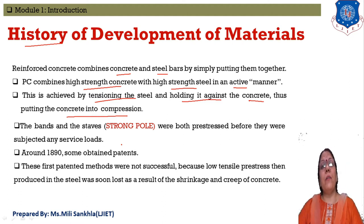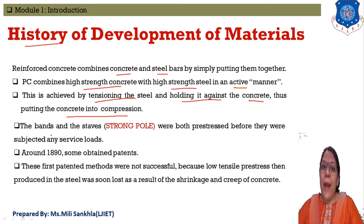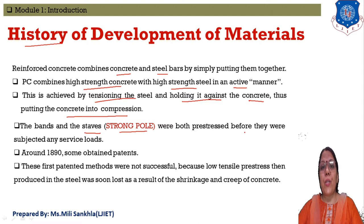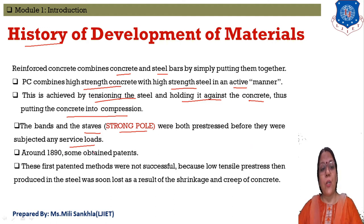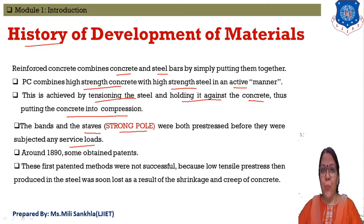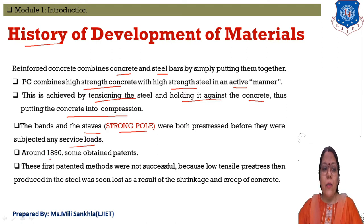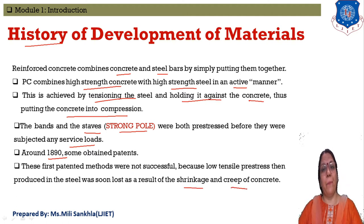This activeness is achieved by tensioning the steel and holding it against the concrete, thus putting the concrete into compression. Bands and strong poles are structures that are prestressed before being subjected to any service load. In the history of development, few patents were registered in 1890, but these patents failed due to the effects of shrinkage and creep, causing the prestressed concrete to lose its strength over time.